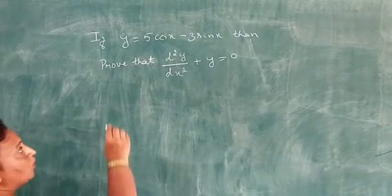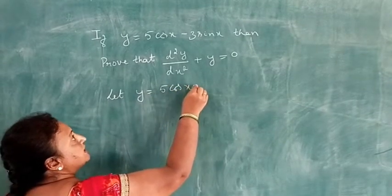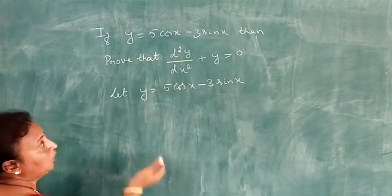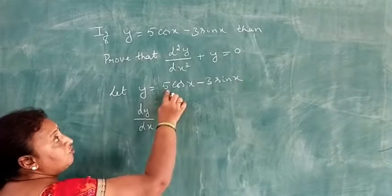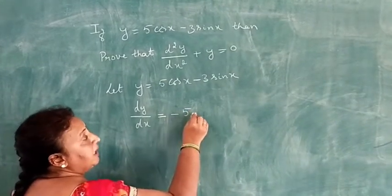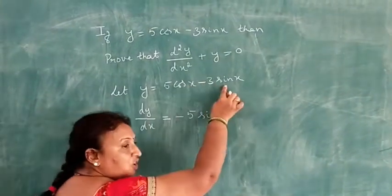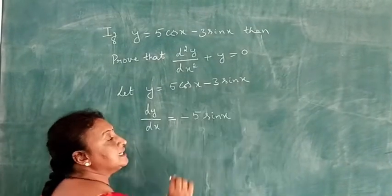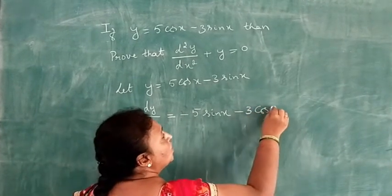Given y equals 5 cos x minus 3 sin x. Differentiating with respect to x: dy/dx equals 5 times derivative of cos x, which is minus sin x, giving minus 5 sin x, minus 3 times derivative of sin x, which is cos x, giving minus 3 cos x.